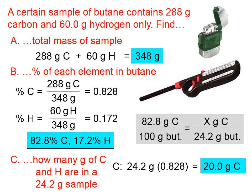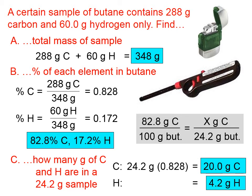If you like to write out proportions: in every 100 grams of butane, 82.8 of those grams are carbon, so in a 24.2 gram sample, cross-multiplying gives the same answer — 20.0 grams of carbon. For hydrogen: if the total sample mass is 24.2 and carbon is 20.0, then hydrogen must be 4.2 grams. Showing the full work: 24.2 times the decimal form of the hydrogen percentage gives the same answer.